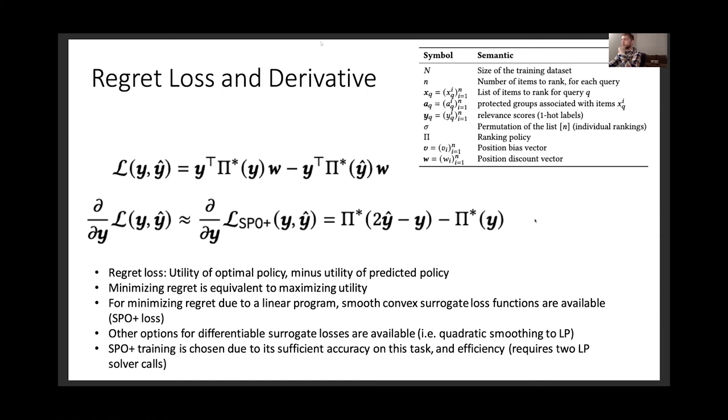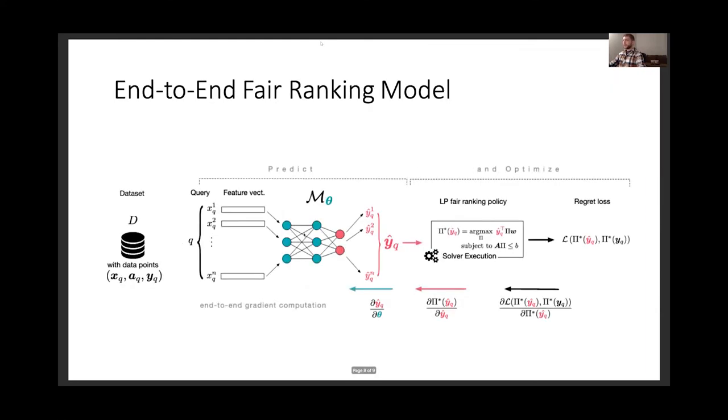one on a predicted cost vector, the other one on your target cost vector, which again is your relevance label coming from click data. So in the forward pass of your network, you have one call to a linear programming solver. In the backward pass, you have two. And especially with hot starting, which is well suited to this problem, these LP solvers can be very efficient.